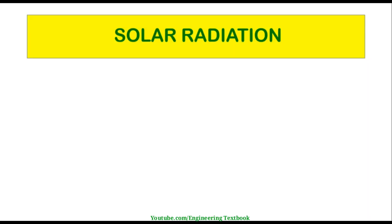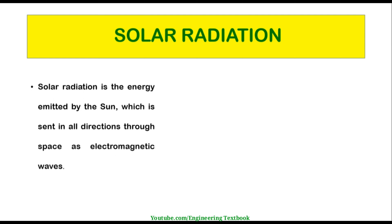Let's see the definition of solar radiation. Solar radiation is the energy emitted by the sun, which is sent in all directions through space as electromagnetic waves. The energy emitted by the sun influences atmospheric processes. It is also directly and indirectly responsible for common phenomena such as plant photosynthesis, keeping the planet at a temperature compatible with life, and wind formation, which is essential for generating wind power.